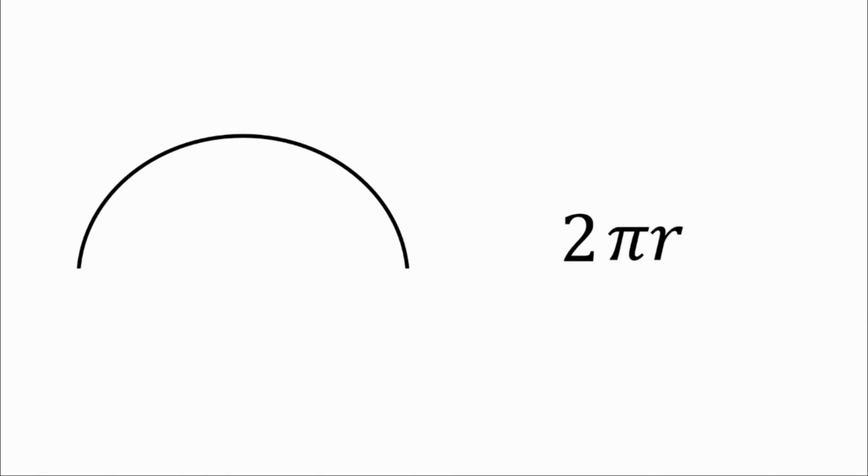If we cut this in half we get the start of a semicircle. So what we've done is we've halved the circle so we're going to half the formula. So instead of 2πr it's now just πr.